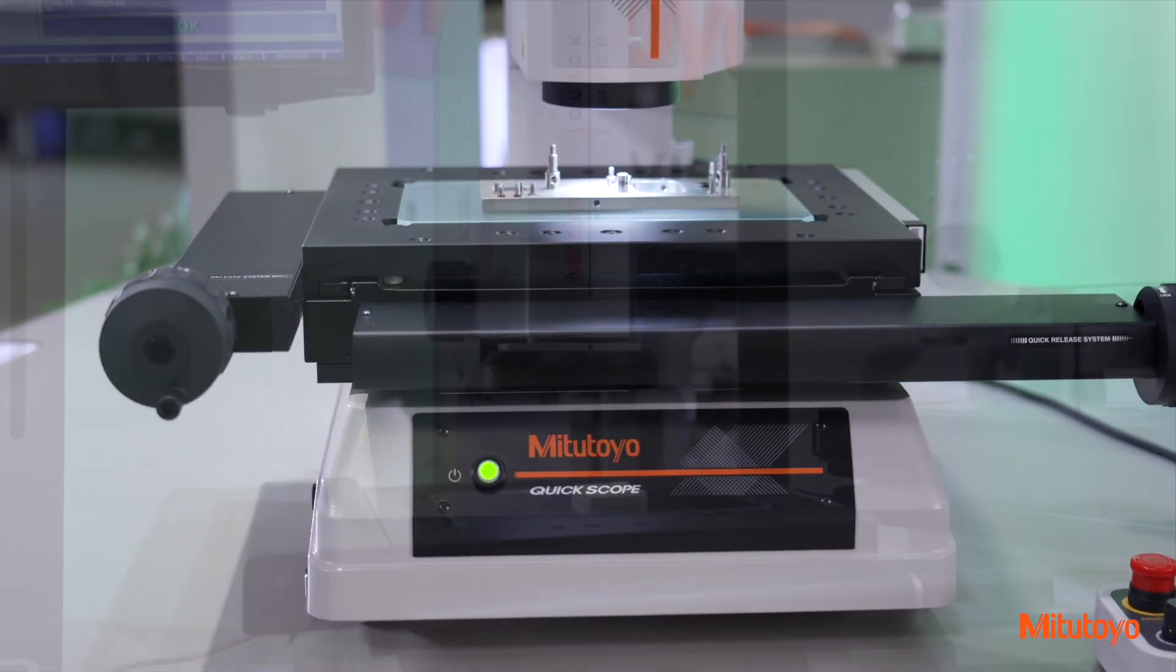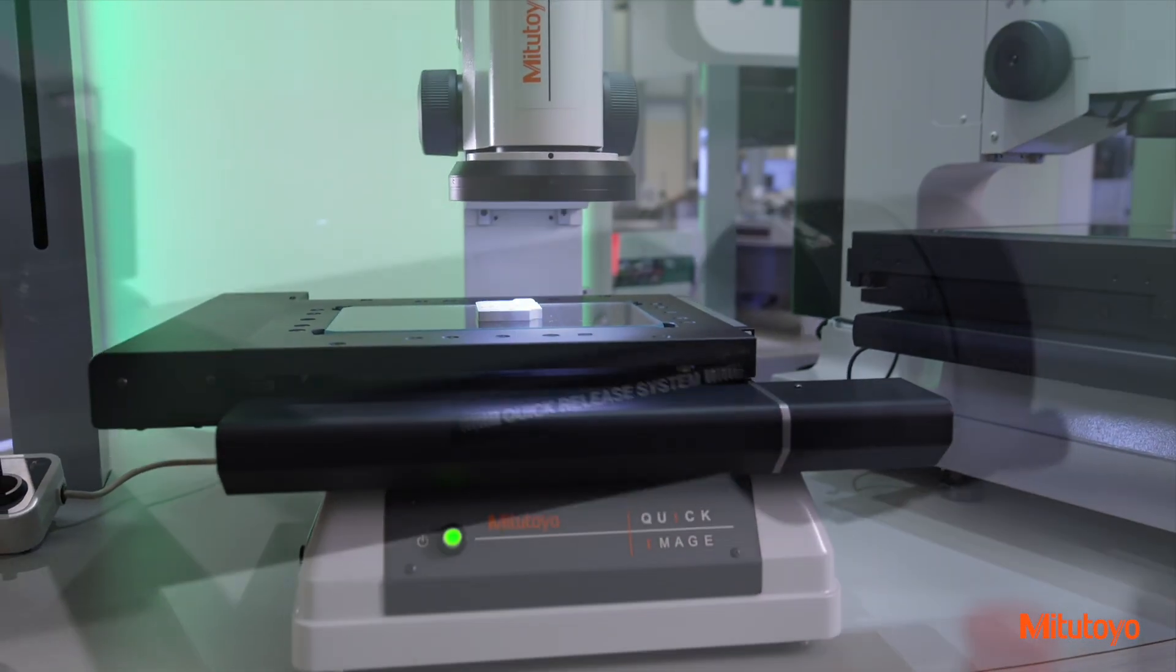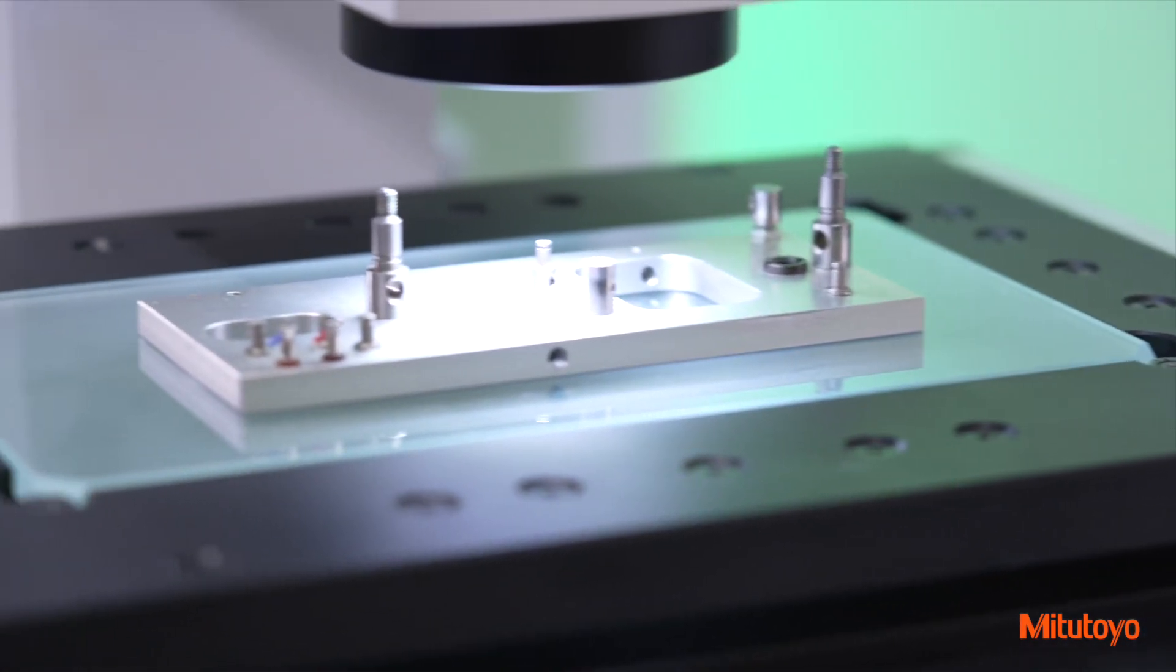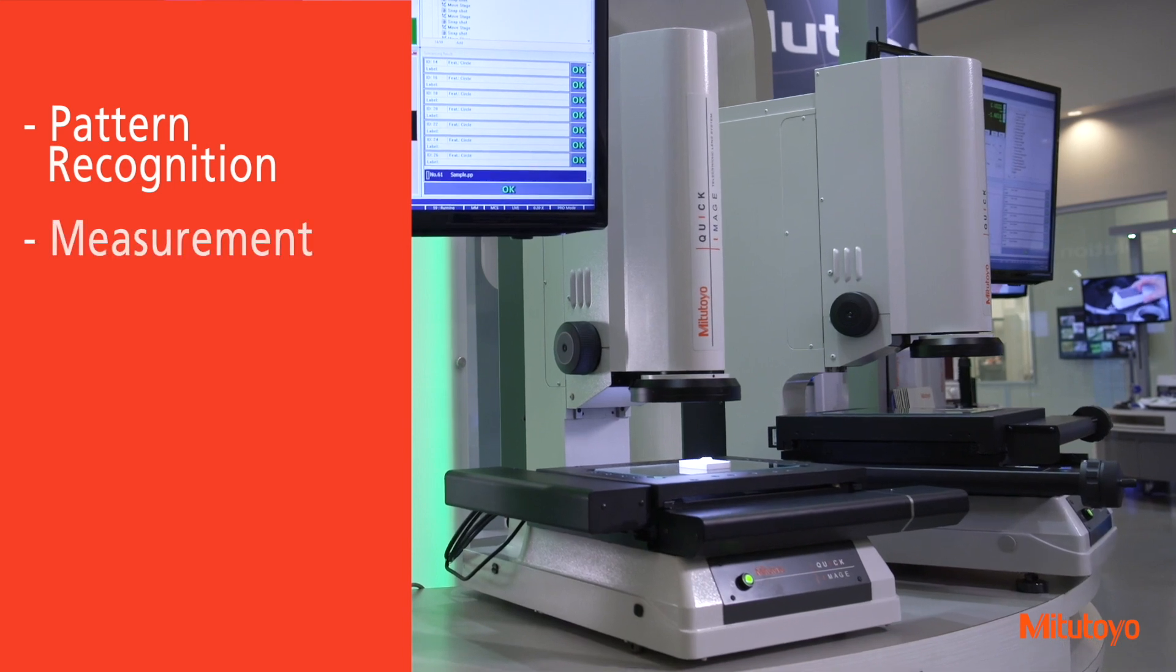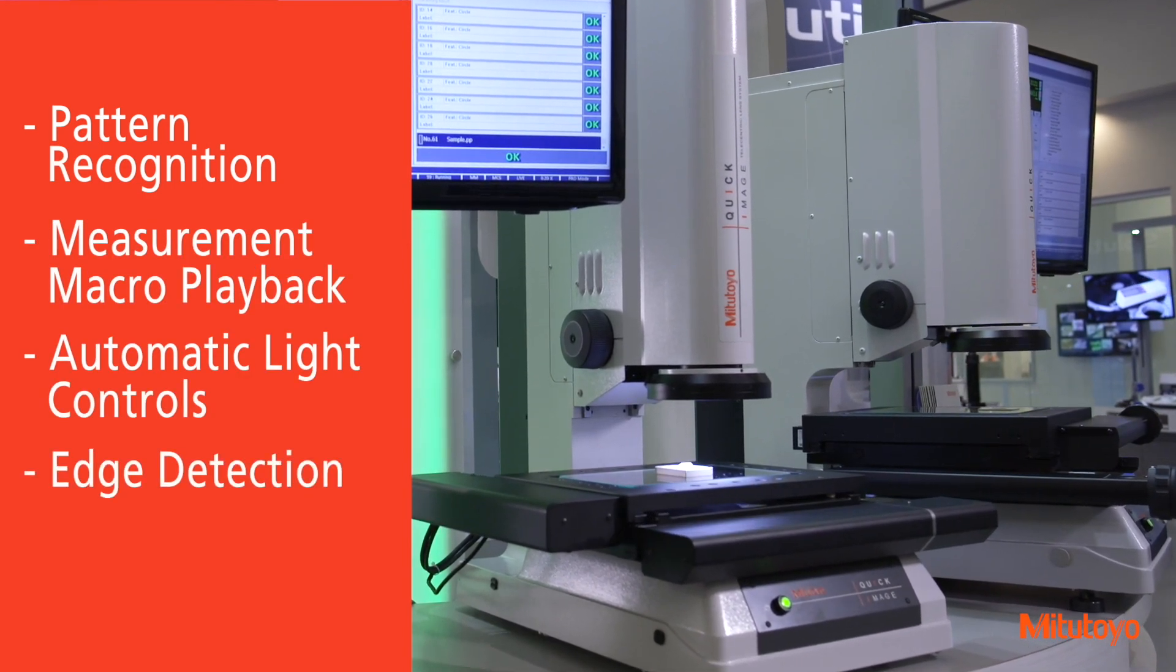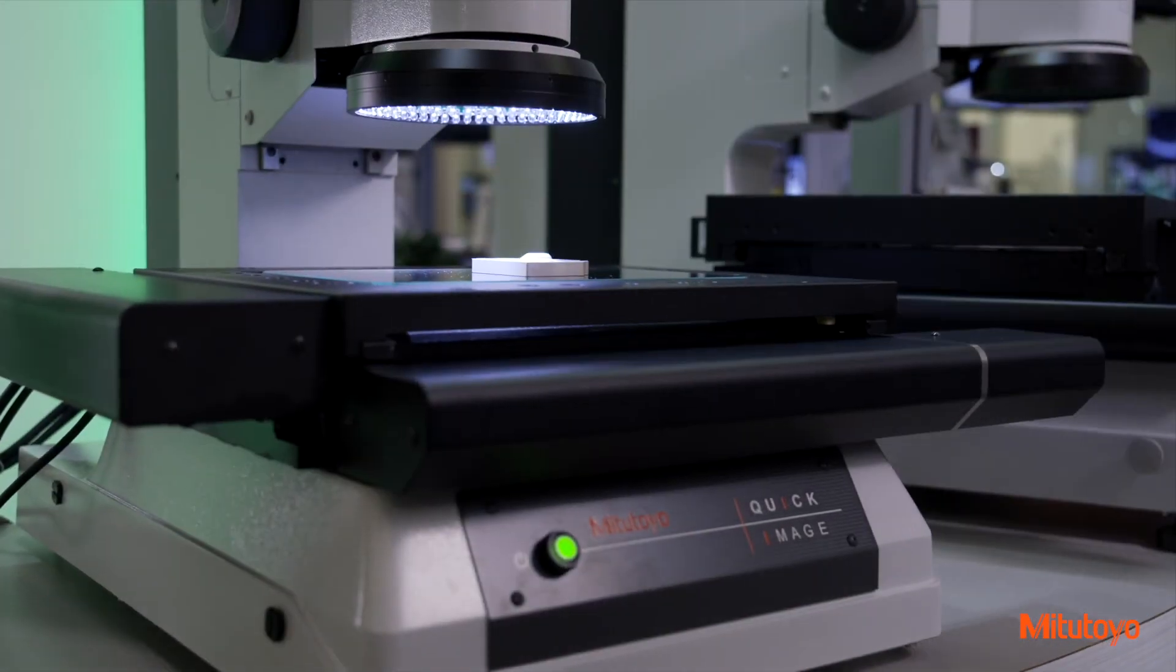Mitsutoyo's QuickScope and Quick Image series offer easy-to-use, economical benchtop vision inspection solutions with capabilities that surpass the competition and features you would expect from higher-end machines. Pattern recognition, measurement macro playback, and automatic light controls and edge detection are just a few examples of the inspection capabilities these machines have to offer.